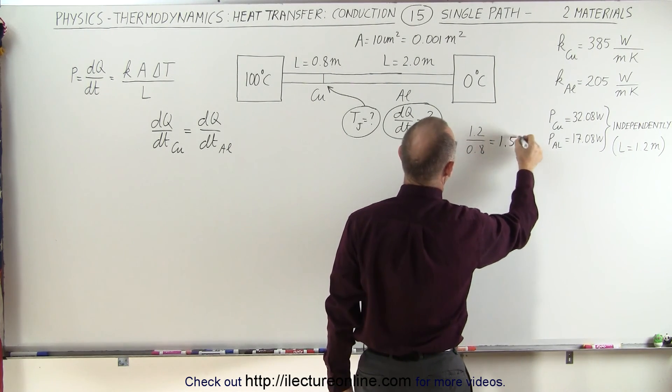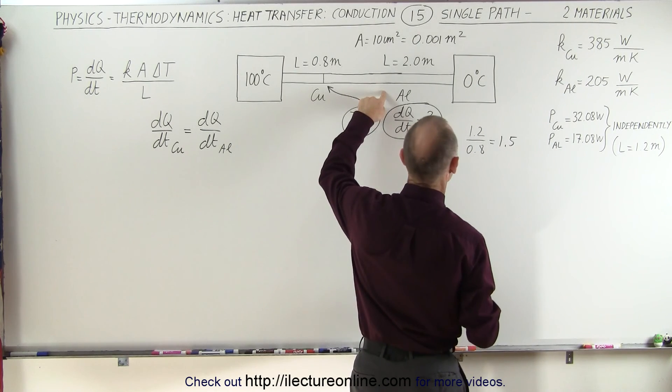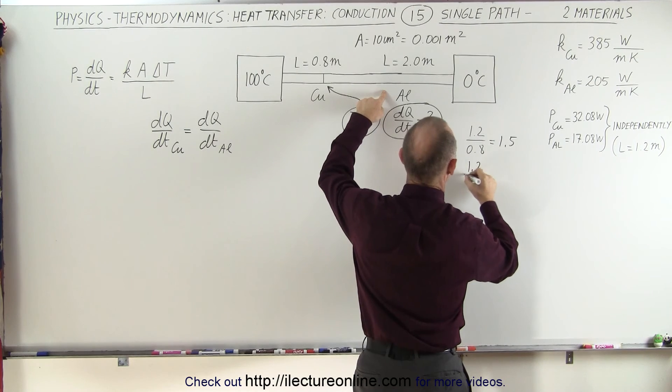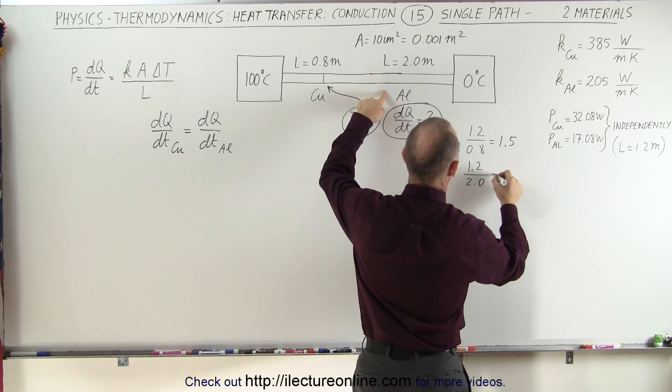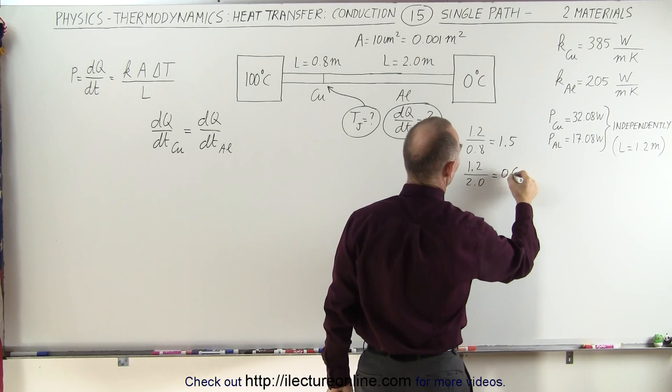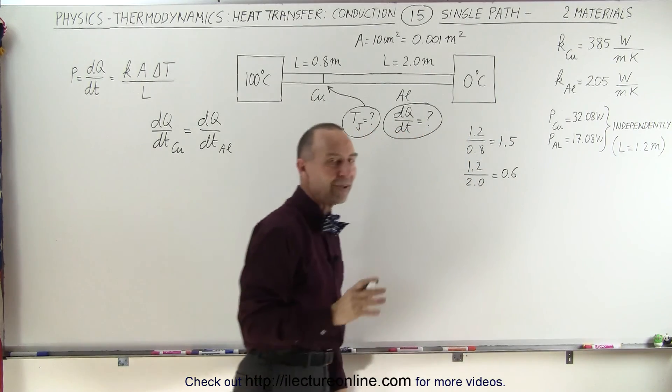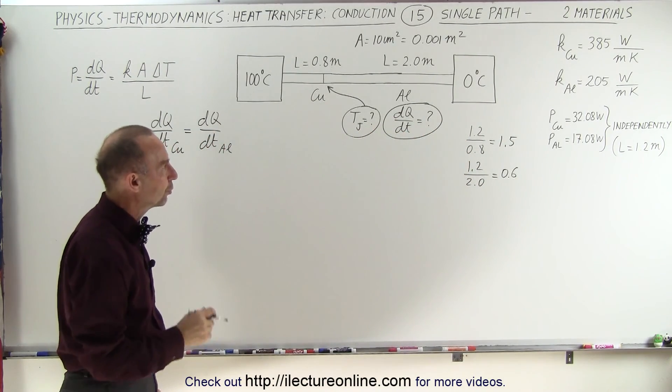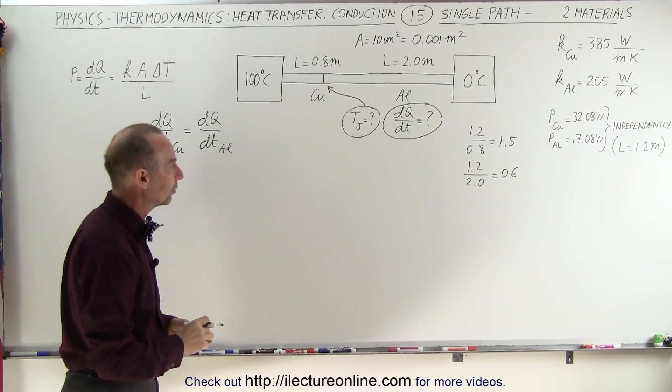And then the factor of the other section is going to be 1.2 divided by 2.0 which is equal to 0.6. So these now become the factors in the equation that we need to find the heat transfer through the entire section of the two metals.